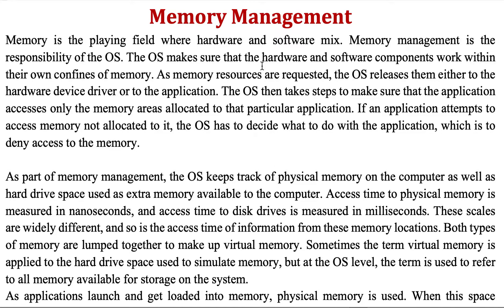In this video I will talk about memory management. When we talk about memory, we refer to main memory, which is random access memory. This is the playing field where hardware and software mix. Memory management is the responsibility of the operating system. Because there are multiple applications working at the same time on the main memory, the operating system needs to make this management so that different applications do not overwrite each other's data. The operating system takes steps to make sure that an application accesses only the memory areas allocated to that particular application.